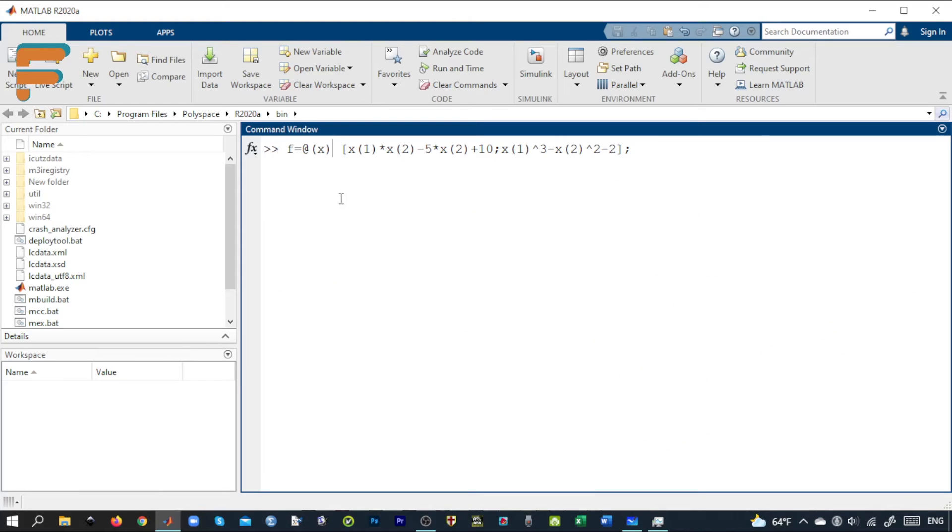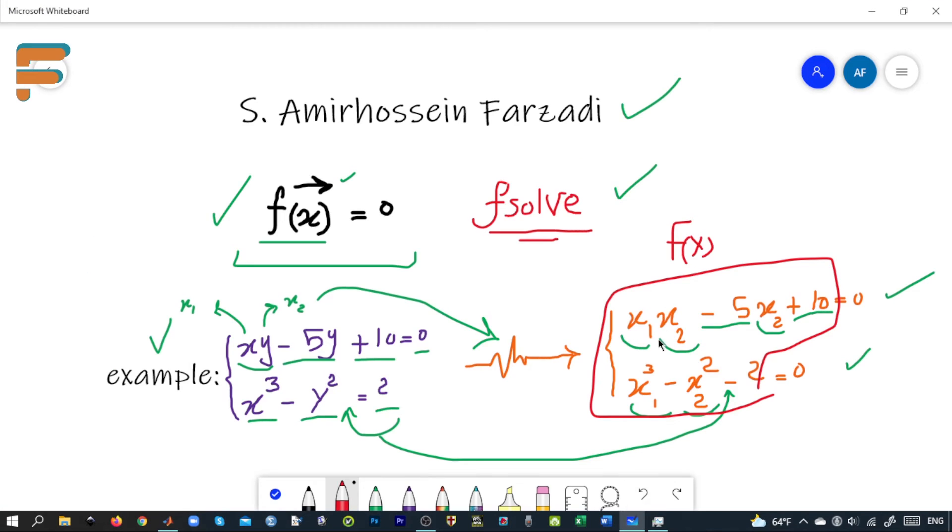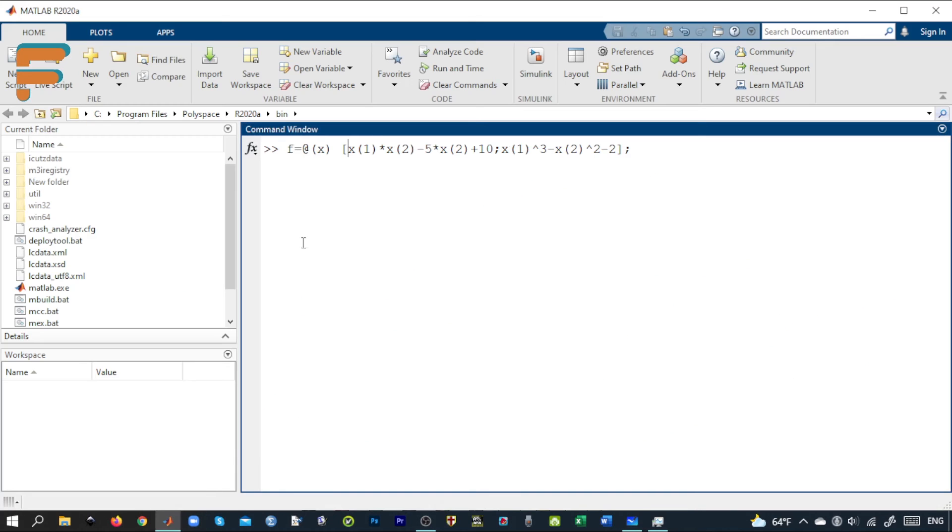Let's define f as a function of x, assuming that x has two components or two elements. The return value is a vector itself. Its first element is x1 times x2 minus 5 times x2 plus 10. In the next row, we have x1 cubed minus x2 squared minus 2.